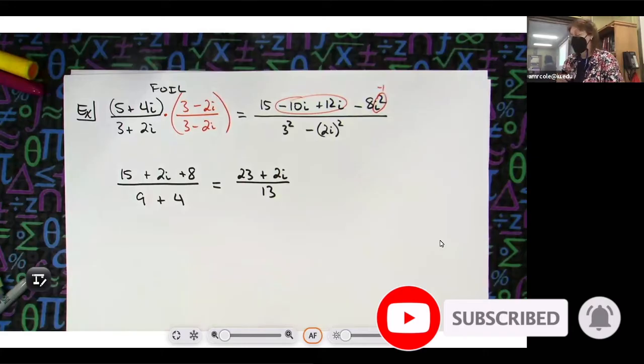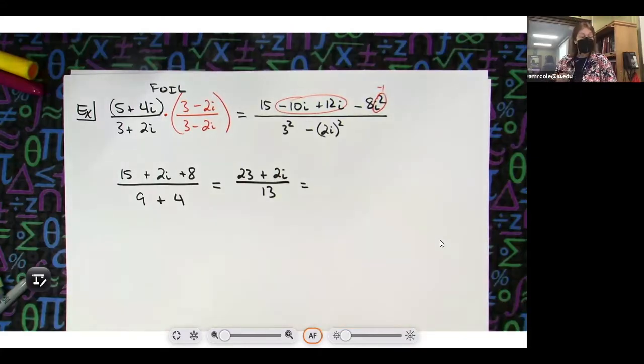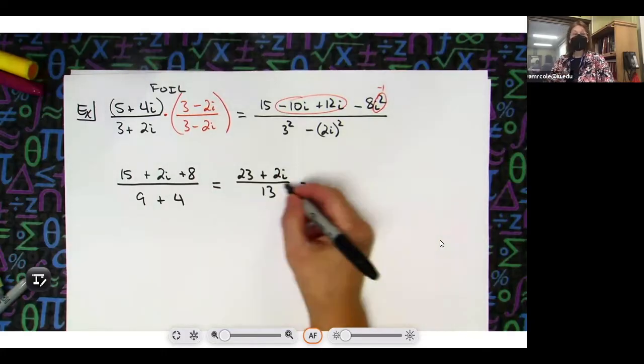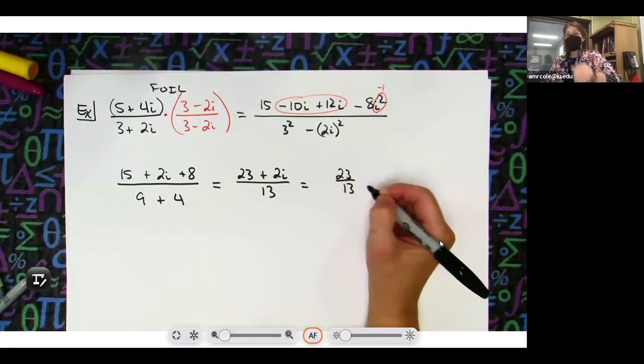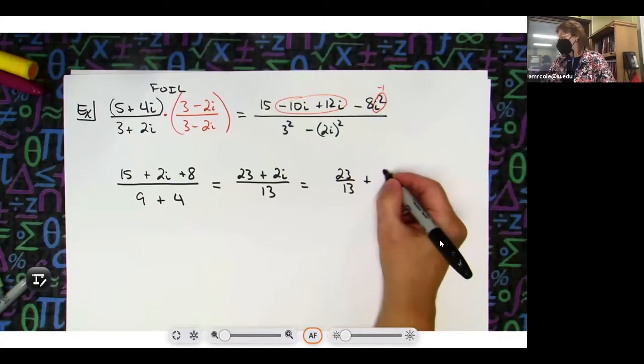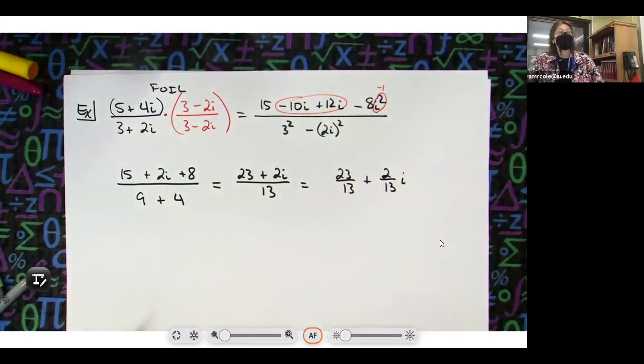If you want to go ahead and break that up into your a plus bi form, nothing crosses out, so 23 over 13 and 2 over 13, and then I always pull the i out there in front.